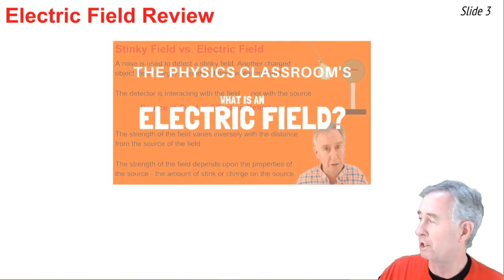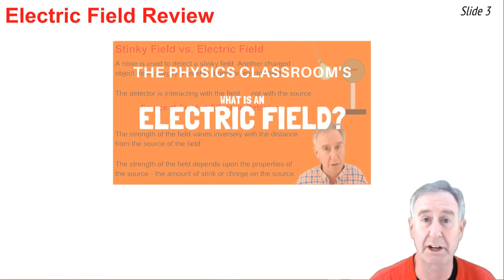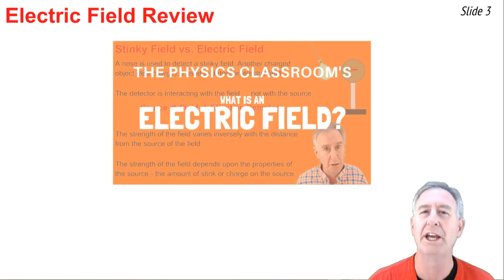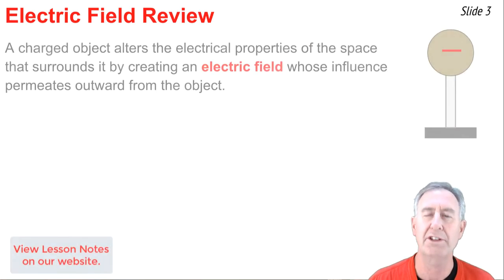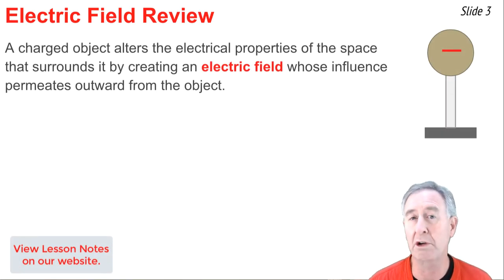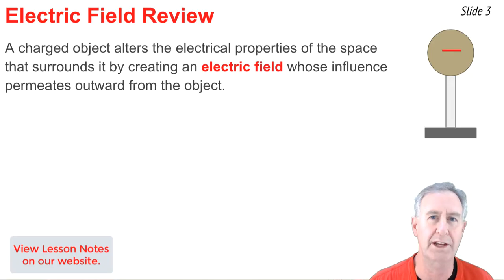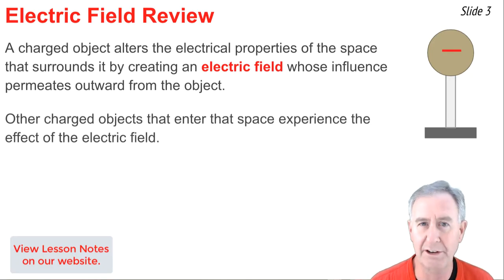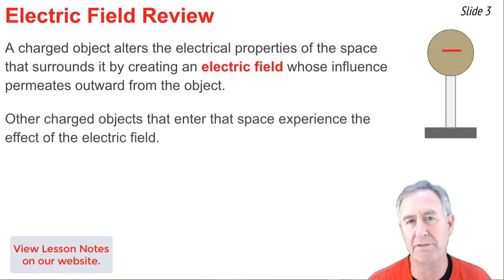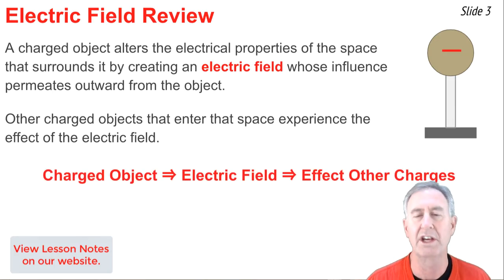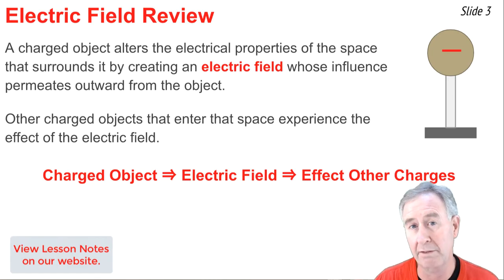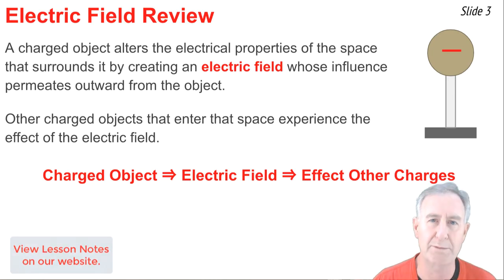In a previous video I discussed the electric field concept — you'll find links in the description section of this one. Here's what we said: charged objects alter the electrical properties in the space that surrounds them by creating an electric field that permeates outwards into that space. Other charged objects that enter that space experience the effect of the electric field. A charged object creates an electric field, and that electric field affects other charged objects.